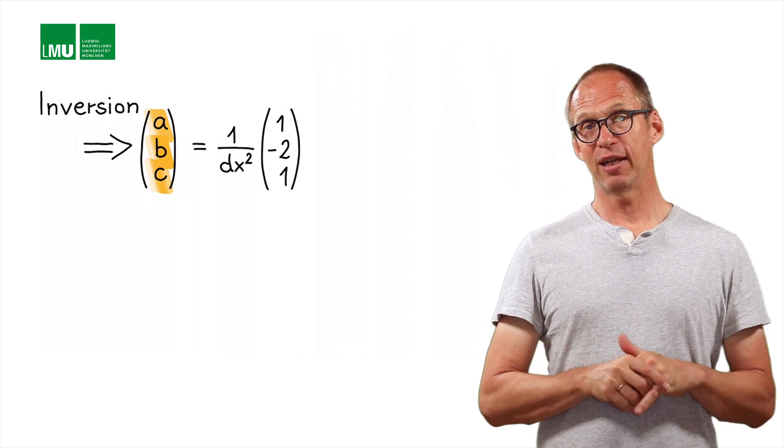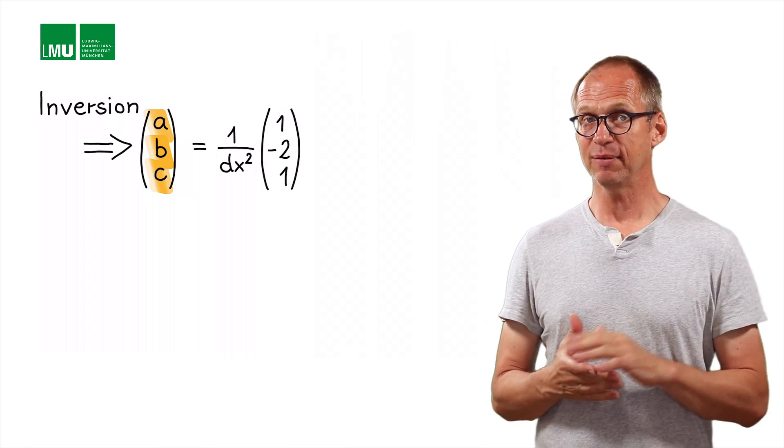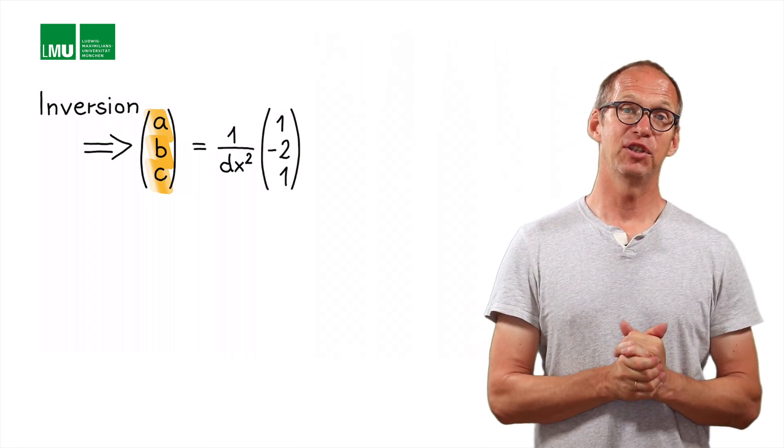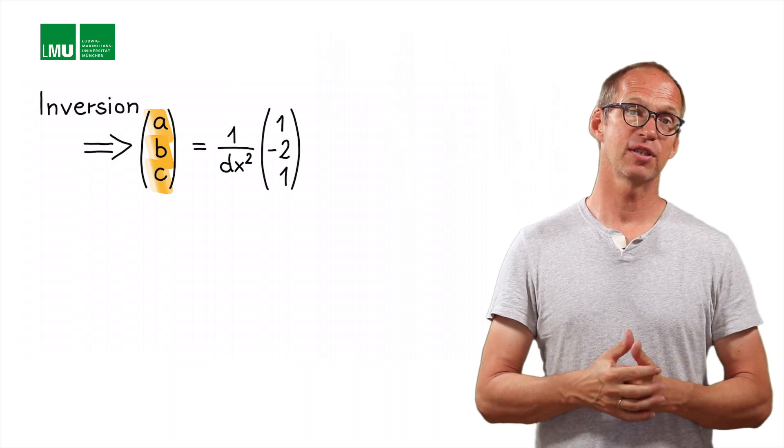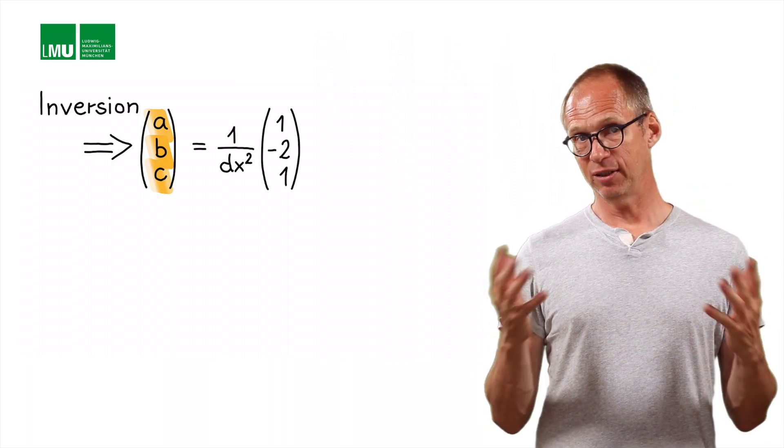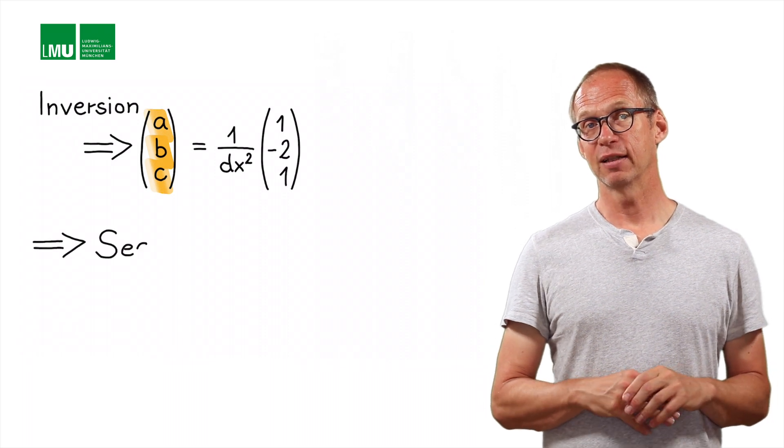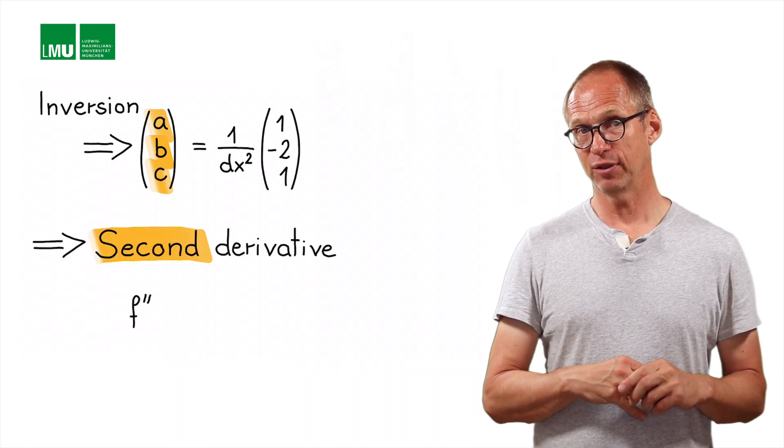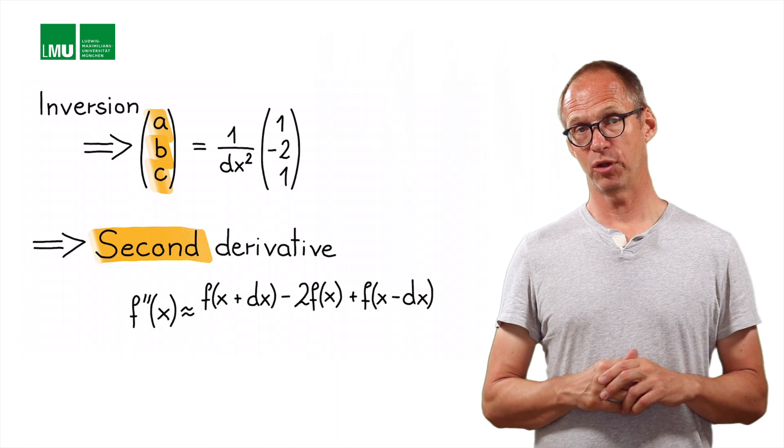So we obtain a, b and c and if we put it back into the left hand side of the equation we recover the original definition of the second derivative for the finite difference approach.